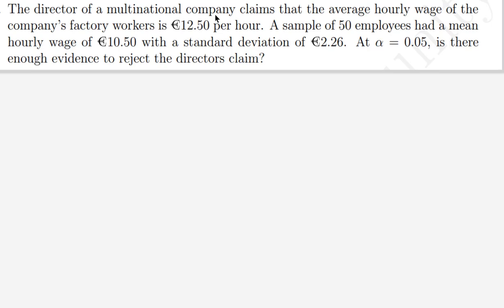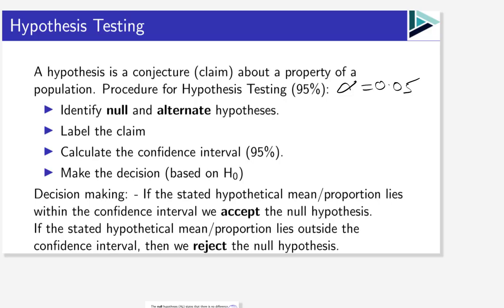Let's look at an example — Question 8. The director of a multinational company claims that the average hourly wage of the company's factory workers is €12.50 per hour. A sample of 50 employees had a mean hourly wage of €10.50 with a standard deviation of €2.26. At alpha equals 0.05, is there enough evidence to reject the director's claim?